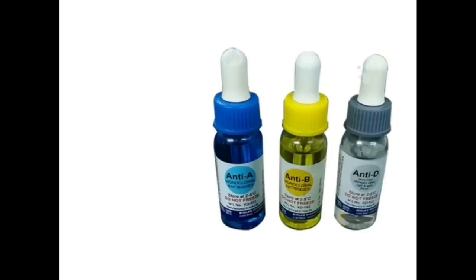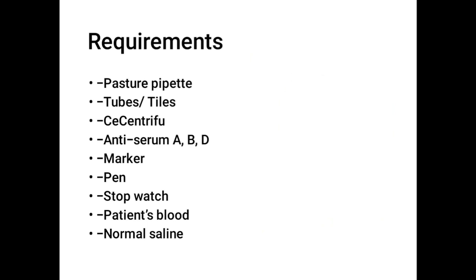The antisera used are: Anti-A, which is blue in color; Anti-B, which is yellow in color; and Anti-D, which is colorless. The requirements for forward blood grouping include: a Pasteur pipette, tubes or tiles, a centrifuge, antisera A, B, and D, a marker for labeling tubes, a stopwatch, patient's blood, and normal saline.